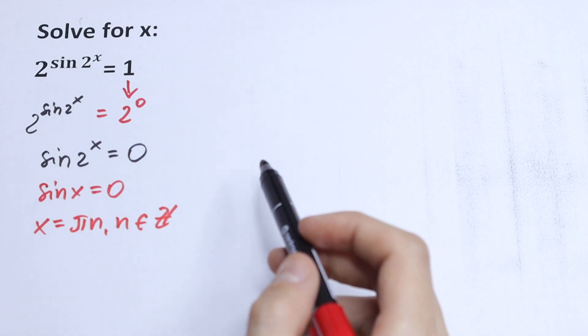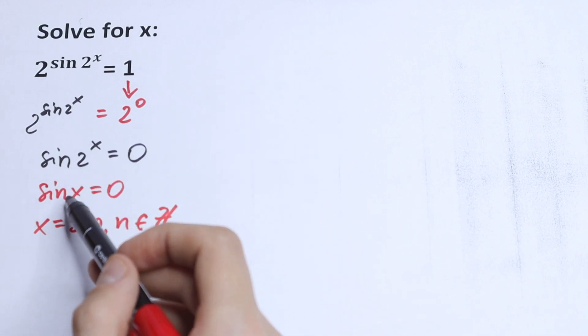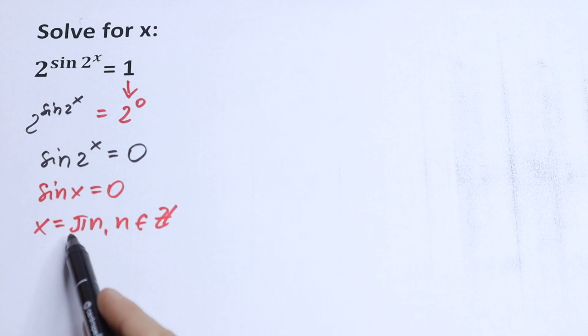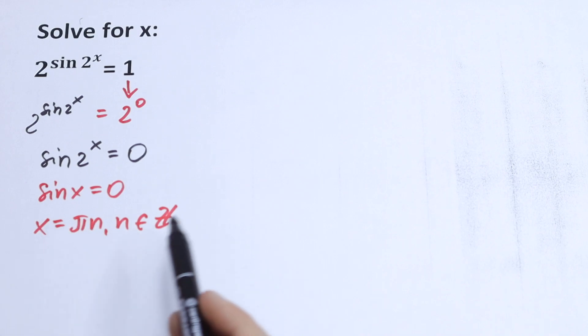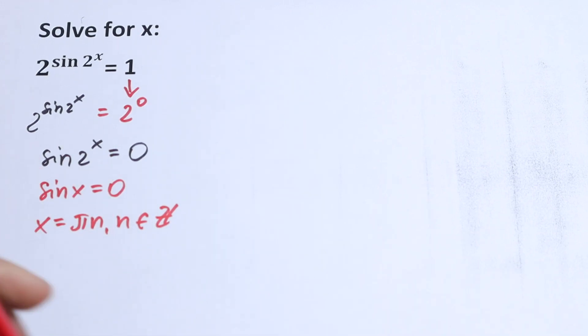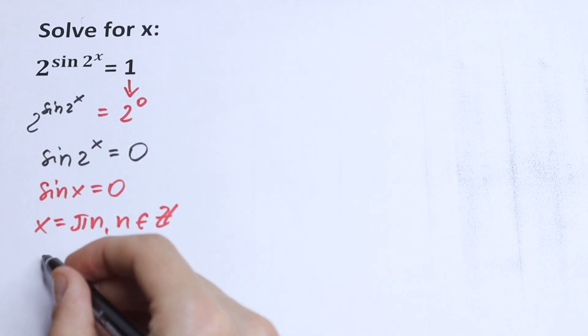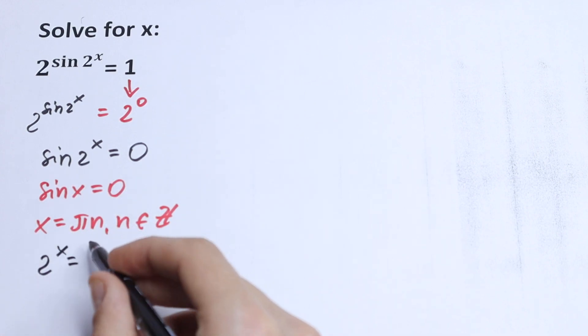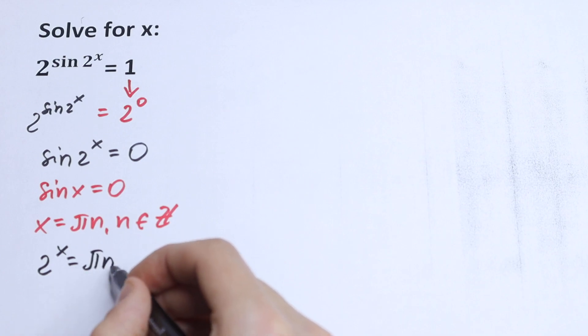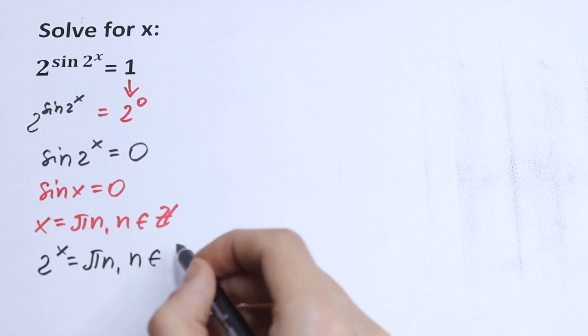How can you do this? How can you solve this? Doesn't matter 2^x, we can write an equation with πn and n is ℤ. So let's do this. We will have just instead of x, we have 2^x. Nothing changed. So we will have 2^x equal to πn, n is ℤ.